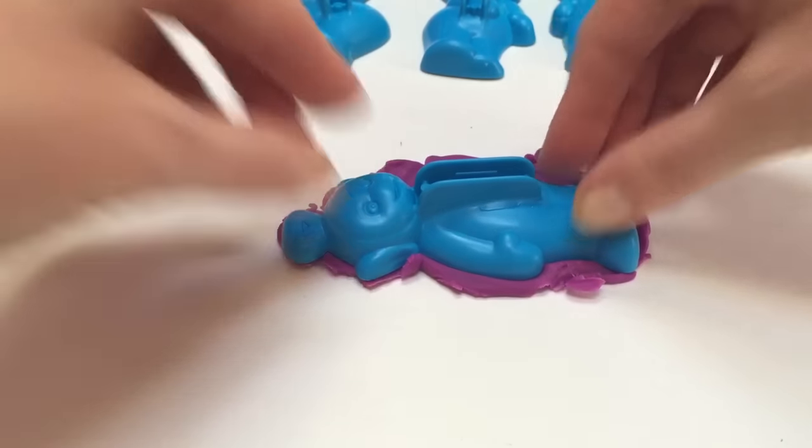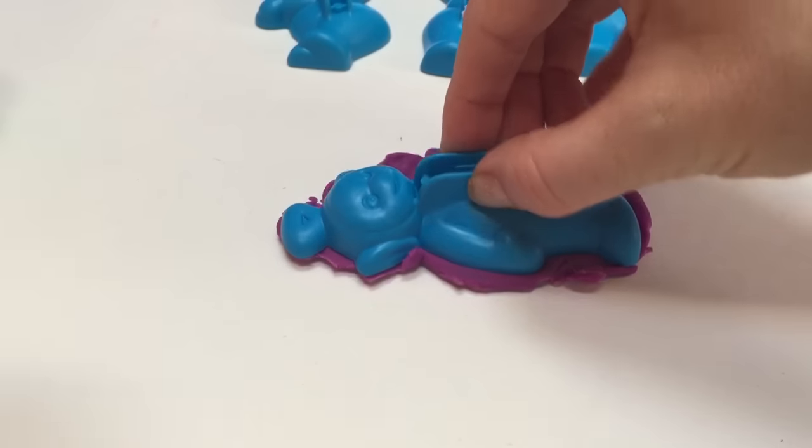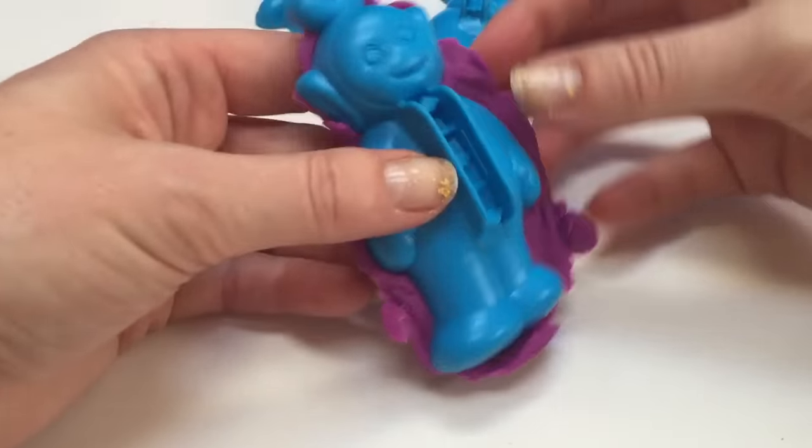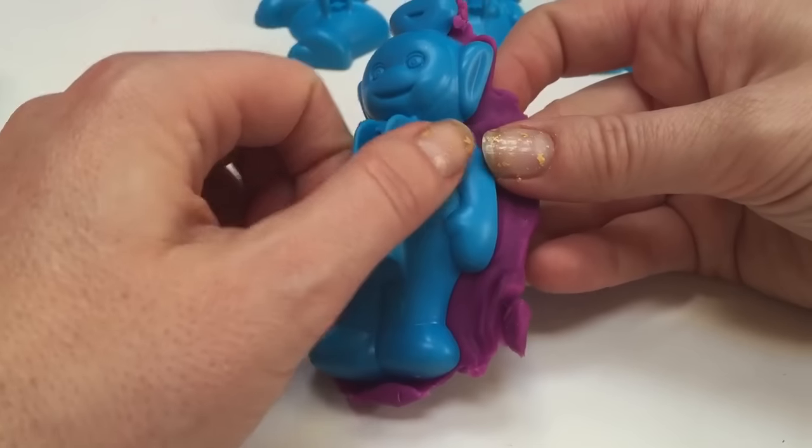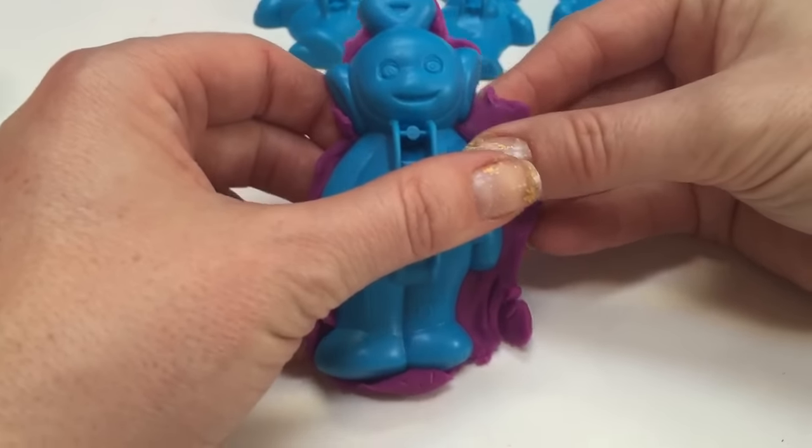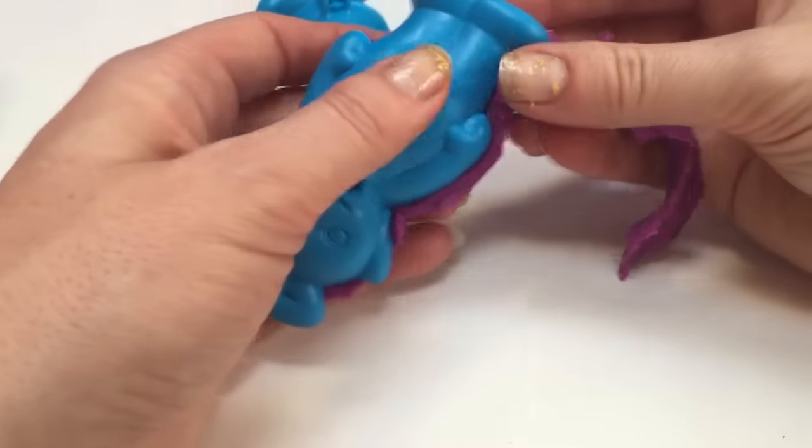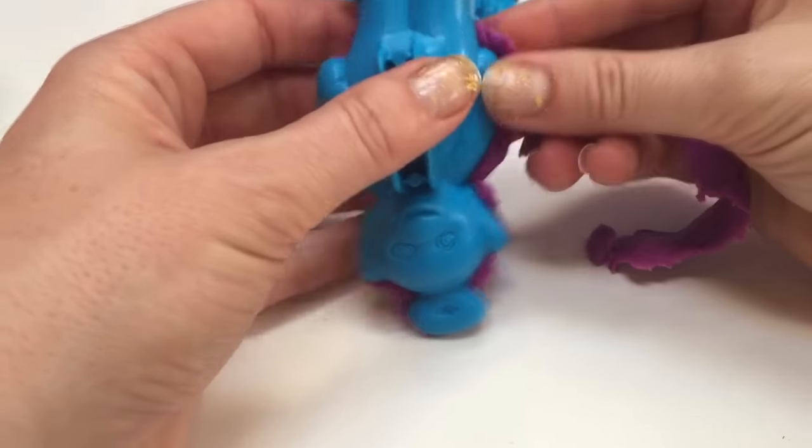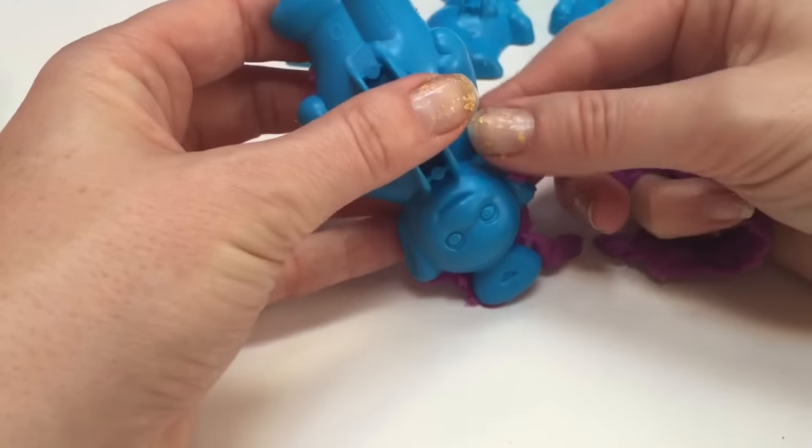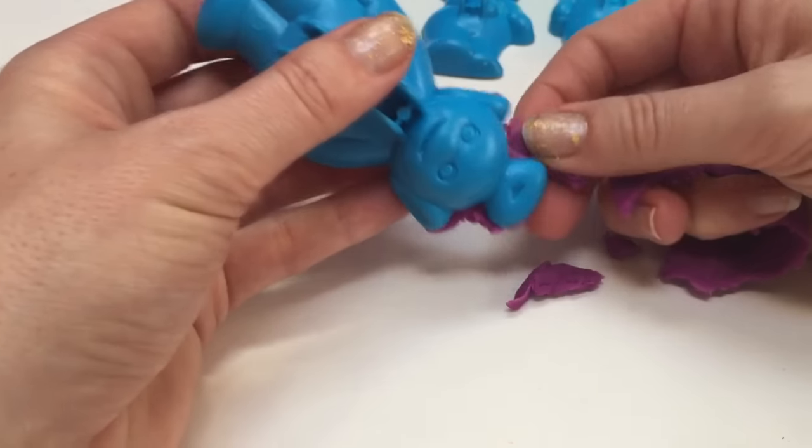Like we're making a cookie. Let's have a look. Actually, let's take off the extra Play-Doh first because it's easier to do it when it's in the mold. And then we'll have a perfect Tinky Winky.